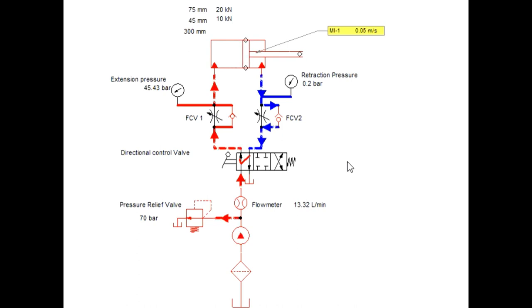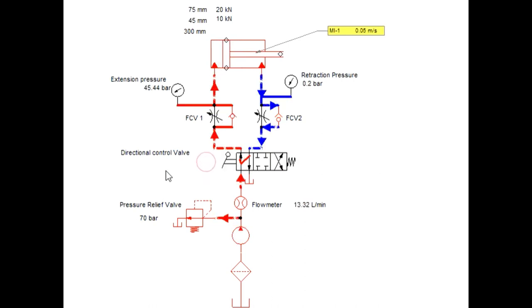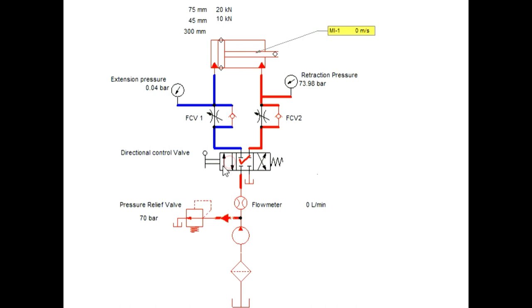The velocity of extension and retraction is also satisfied. The required velocity of extension is 0.05 m/s and the retraction velocity required is 0.08 m/s. Both velocities and pressures built into the circuit are as per our calculations. So all components and the circuit design, selected with the help of the design data, are correct. Try to design different circuits using the same steps and simulation method. Thanks for watching.